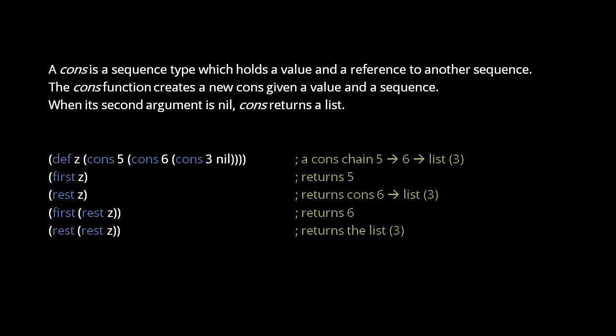Because a cons itself is a kind of sequence, conses can reference other conses and thus form a chain. Here we def to z a cons with the value 5, which references another cons with the value 6, which references a list with one element 3.